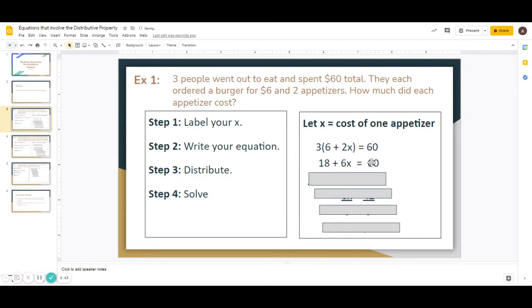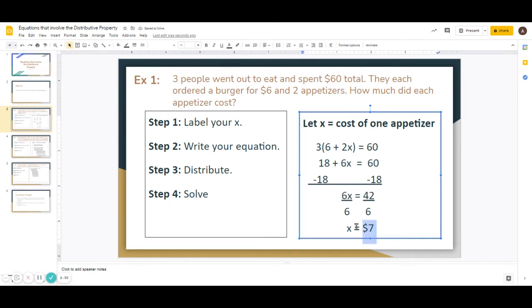Now here we're going to distribute. So three times 6 is 18. Three times 2x is 6x. And then we get 60. Then you're going to subtract 18 on both sides. And you get 6x is equal to 42. Then you're going to divide both sides by 6. And you get x is $7. So this $7 represents the cost of one appetizer. And if you go back and check, if you plug it back into your equation, you will end up getting $60.